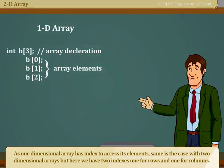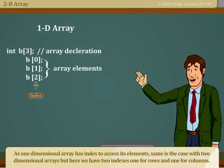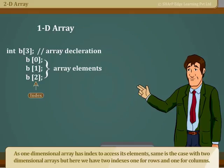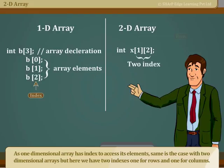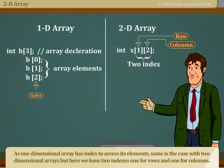As one-dimensional array has index to access its elements, same is the case with two-dimensional arrays, but here we have two indexes, one for rows and one for columns.